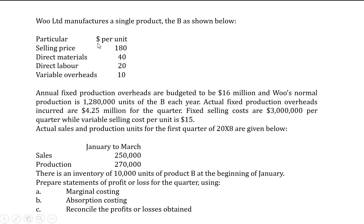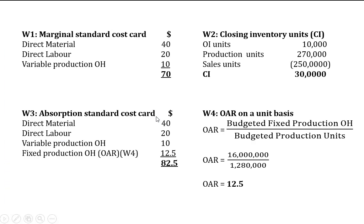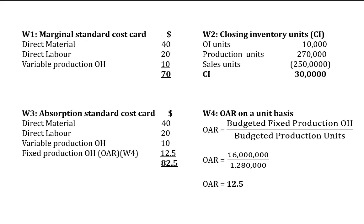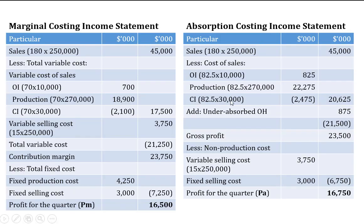The actual fixed production overheads for the quarter were $4.25 million, but we only absorbed $3.375 million. Since absorbed overheads are less than actual overheads, there is an under-absorption. The difference is $875,000. Because it is an under-absorption, we add it back to the cost of sales to obtain the correct figure.